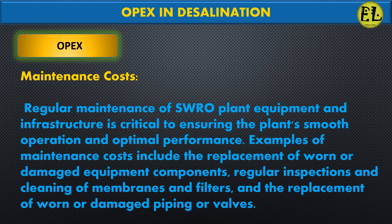Maintenance costs: regular maintenance of SWRO plant equipment and infrastructure is critical to ensuring the plant's smooth operation and optimal performance. Examples of maintenance costs include the replacement of worn or damaged equipment components, regular inspections and cleaning of membranes and filters, and the replacement of worn or damaged piping or valves.